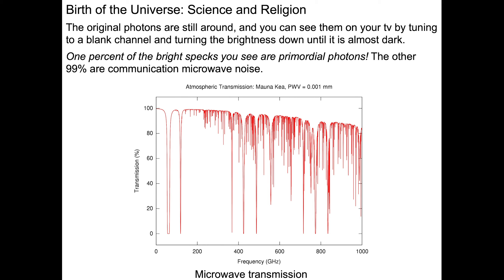Some of the original photons from this Big Bang are still around, and you can see them on a TV if you have an old CRT TV by setting it to a channel that isn't functional and turning the brightness down until you can barely see some little flashes. About 1% of those little flashes are some of these original or primordial photons. The rest is going to be communication microwave noise that we generate ourselves.